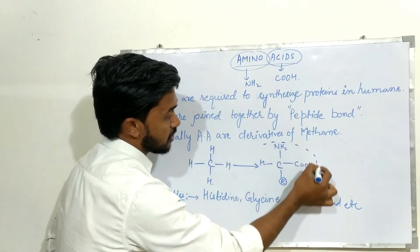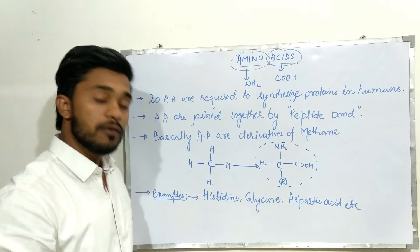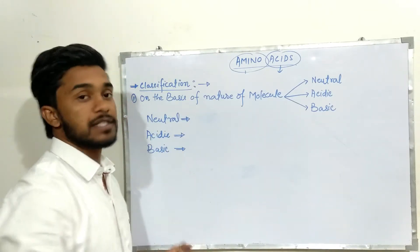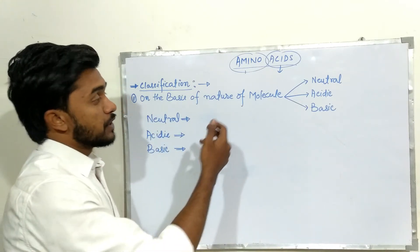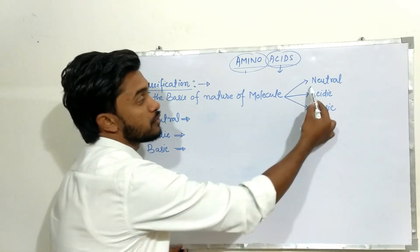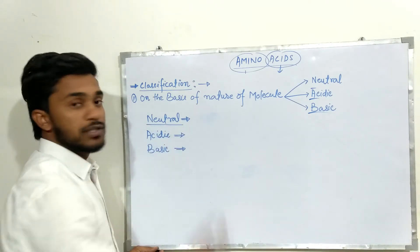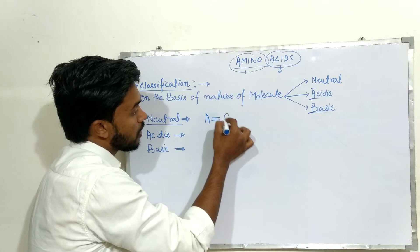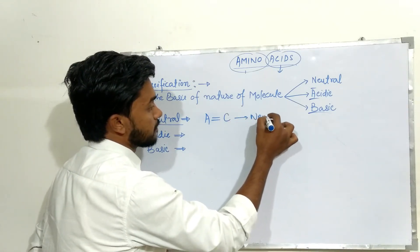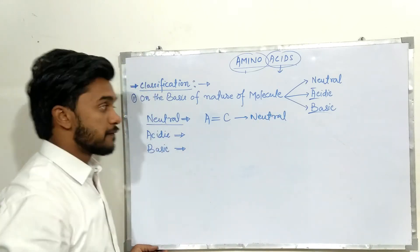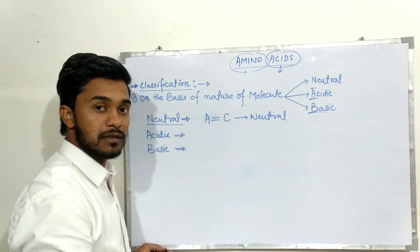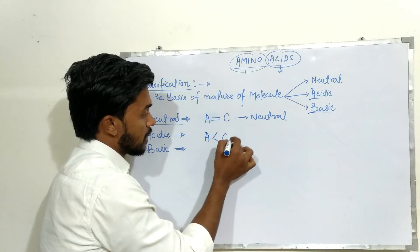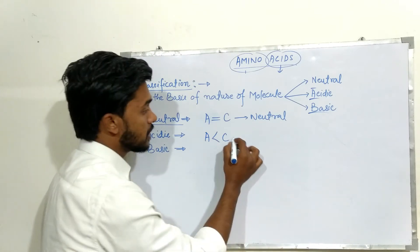This is also the general formula of amino acids. Now we will talk about the classification and structure of amino acids. On the basis of the nature of the molecule, we have three types: neutral, acidic, and basic amino acids. A neutral amino acid contains an equal amount of amino and acidic content. If the amino acid contains a greater number of carboxylic acid groups, then it is acidic in nature.